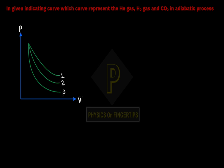So, PV curves given are curve 1, 2, and 3. We need to identify which is helium, which is H₂, and which is CO₂.